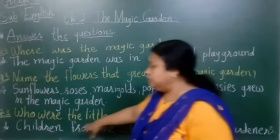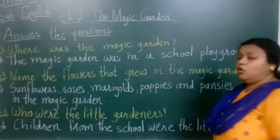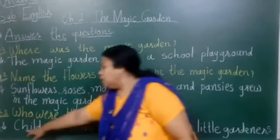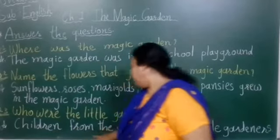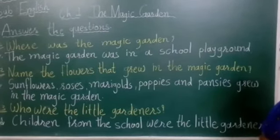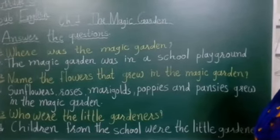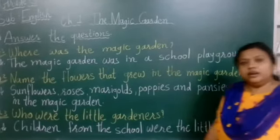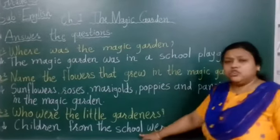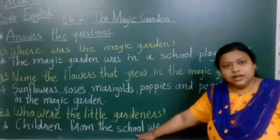Third question: Who were the little gardeners? The answer is: children from the school were the little gardeners. Jho school ke chote chote bachye thay, woh gardener thay.